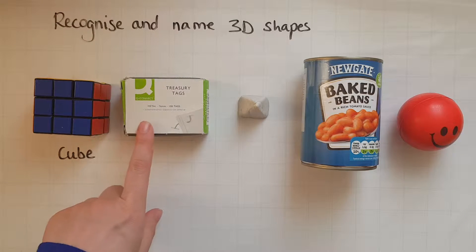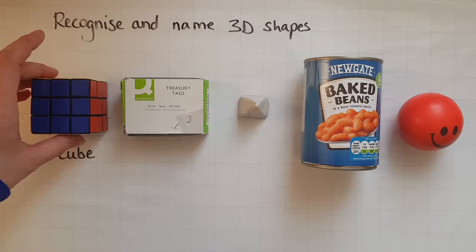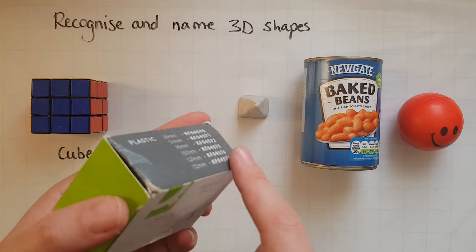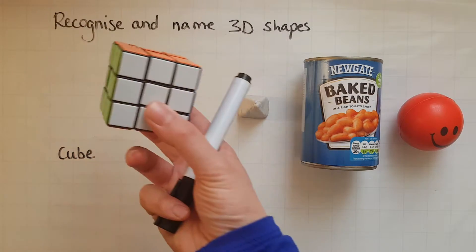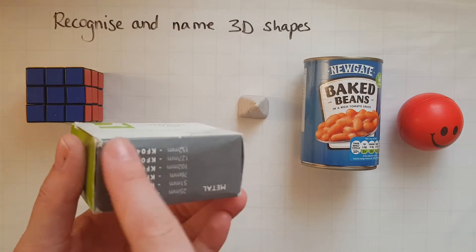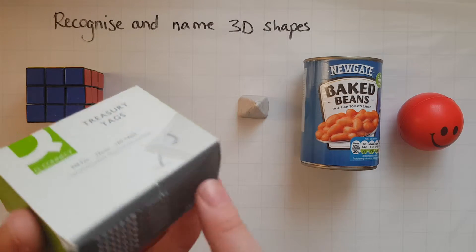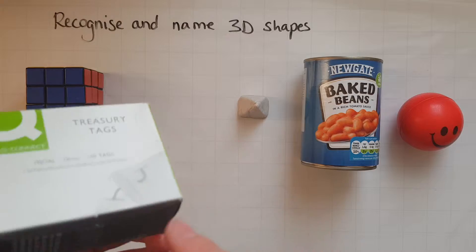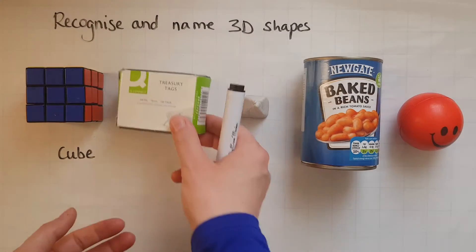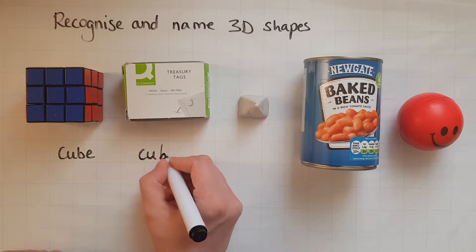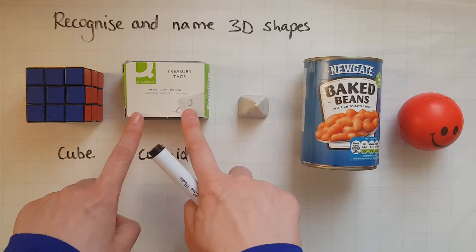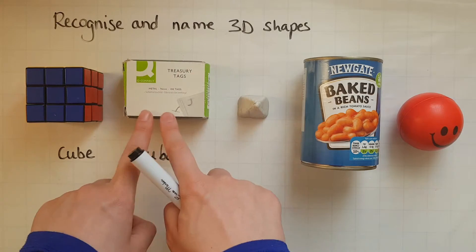Next to it is something which is very similar — another shape which looks very similar to a cube but some sides are actually longer, not exactly the same as they are in the cube, but they are longer. This is just a box and most of the boxes have this shape; they are cuboids. The names are very similar as well — cuboid is longer, just as these sides are longer.